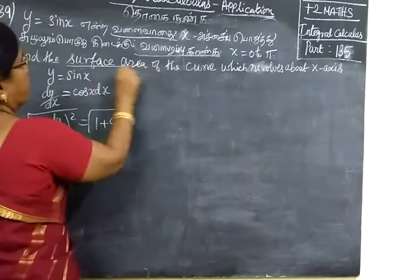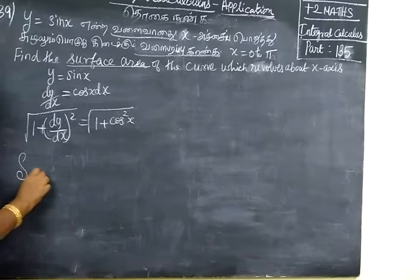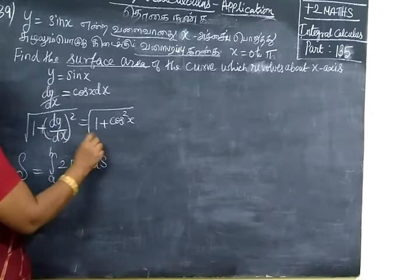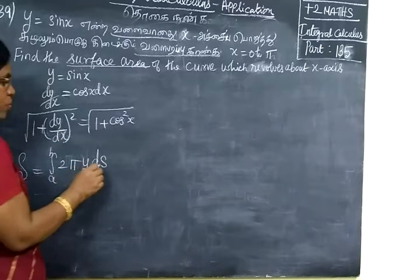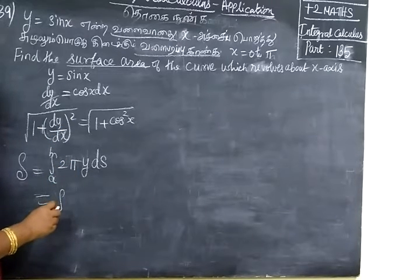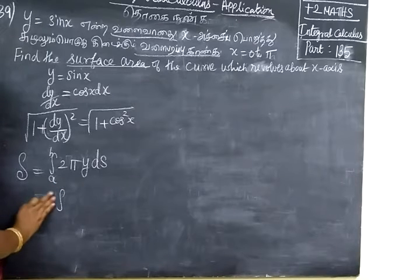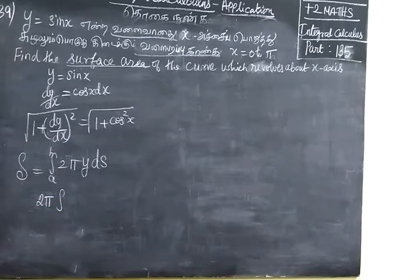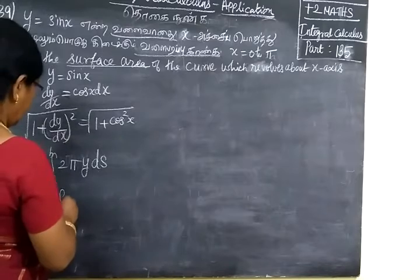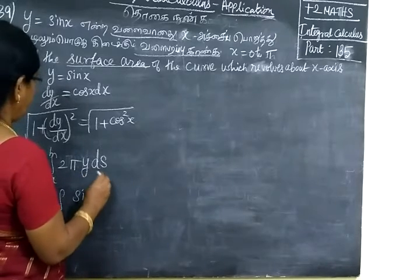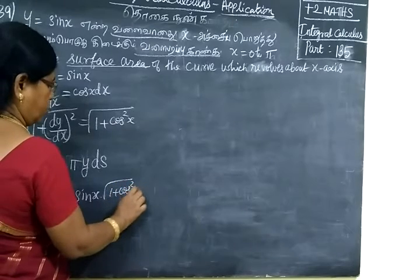We are finding the surface area. Surface area is given by the integral from a to b of 2πy ds, where ds equals the root of 1 plus (dy/dx) squared. The limit is 0 to π, so we write it as 2π.